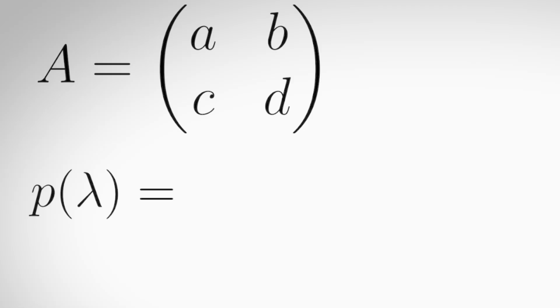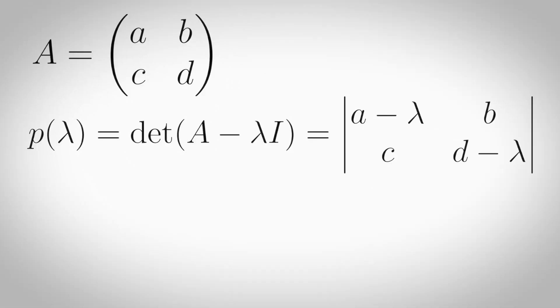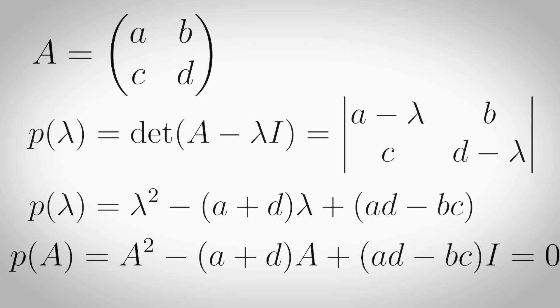Cayley-Hamilton Theorem. For an n by n matrix A, its characteristic polynomial is the determinant of the eigenvalues times the identity matrix minus A. And if you take that polynomial, replace lambda with the matrix A, you get the zero matrix.